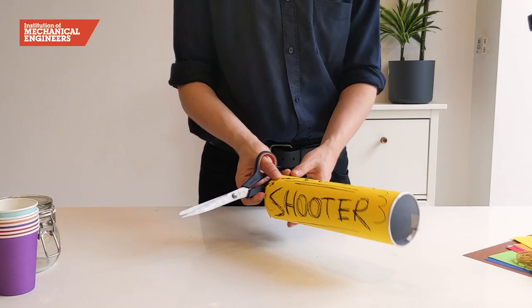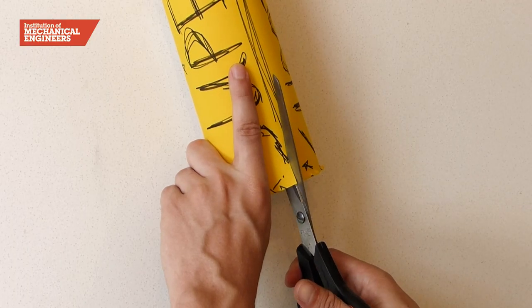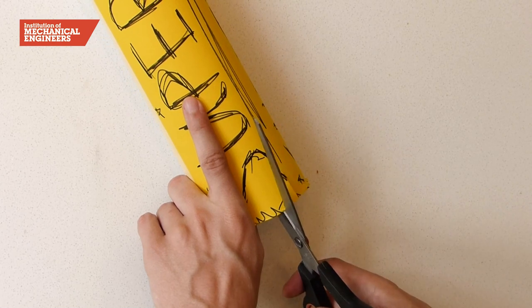Next, using your scissors, cut two notches on either side of the tube, roughly 2cm wide, and make sure these are opposite each other.